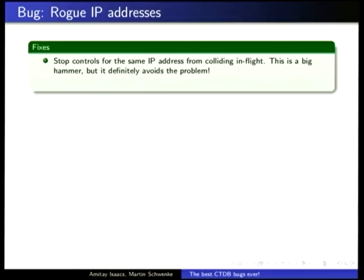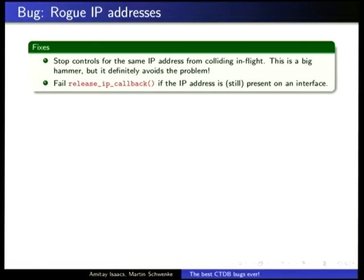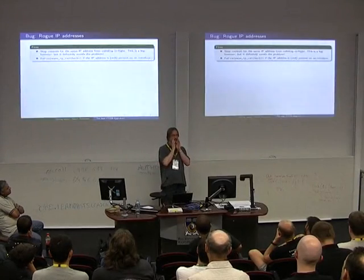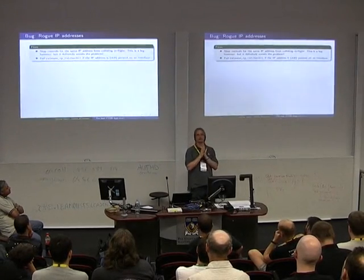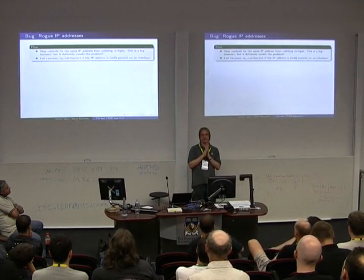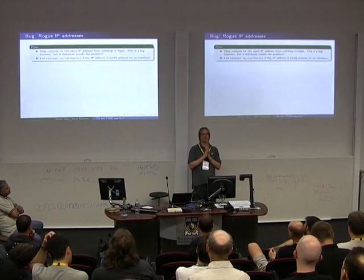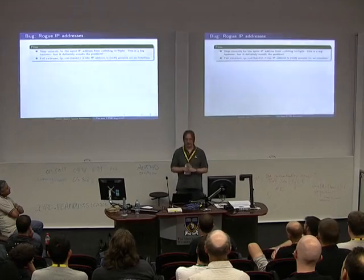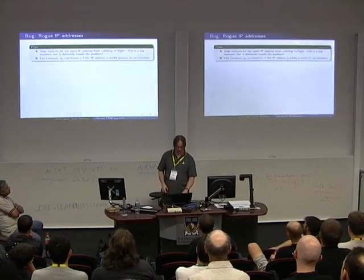The simple workaround: if you notice this happening, instead of saying 'I don't have a record of what interface this IP address is on,' you ask the operating system and try to remove it. There are other fixes too — a big hammer: put in a lock so that when you're running one of these and another comes in, you say no, go away, there's already one happening. So you can't do a partial release and then have a take IP intervene. In the release IP callback, you check with the operating system whether this IP address is on an interface somewhere, and if it says yes, you return an error.